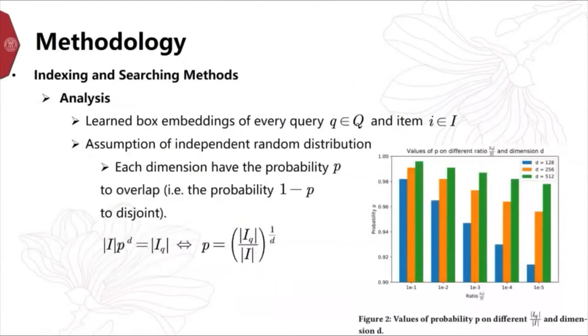After learning box embeddings of all queries and items, we introduce our box embedding based indexing and searching methods. First, we give the analysis about the overlap probability in each dimension. Under the assumption of independent random distribution, each dimension has the probability P to overlap. Considering all dimensions, we can obtain the relevant item set IQ. In Figure 2, we can find that the embedding size in learning process usually makes P close to 1. It means that in single dimension, the items disjointed with the queries are the majority. Inspired by this finding, we can obtain the relevant items by filtering the irrelevant items in each dimension.